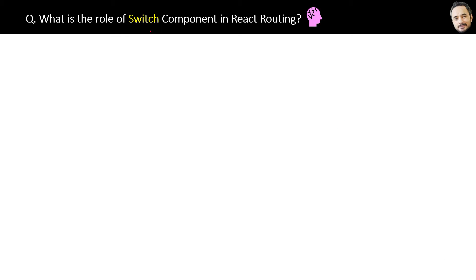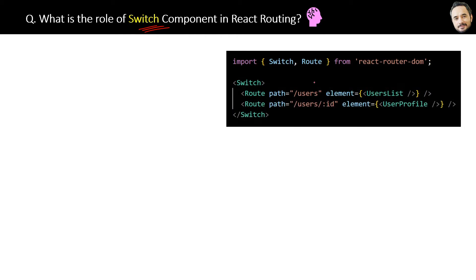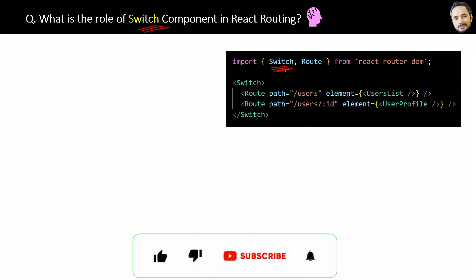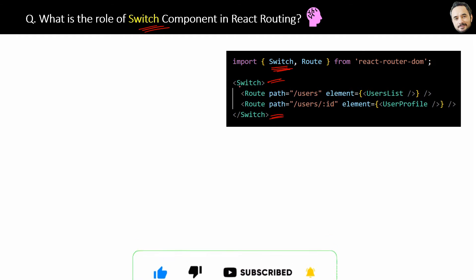What is the role of the Switch component in React Router? In the code there is one more component that can be used as a container for multiple route components, and that is the Switch component.